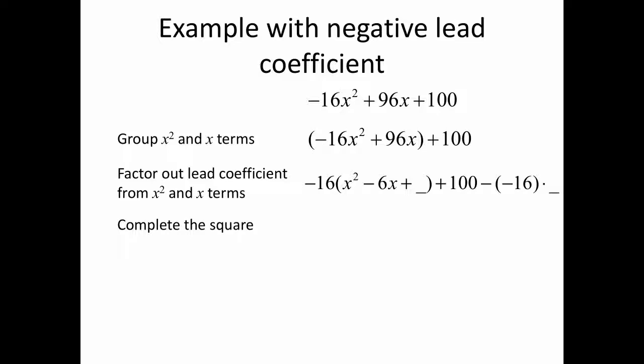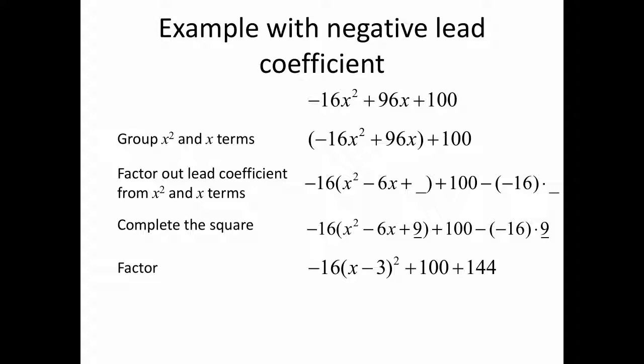We complete the square: half of negative 6 is negative 3, squared is 9. So we add 9 inside the parentheses and subtract negative 16 times 9 outside. Subtracting negative 16 times 9 simplifies to adding 144. We factor, simplify the constant term, and this ends the series of videos on completing the square.